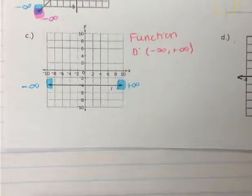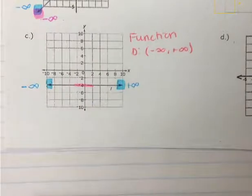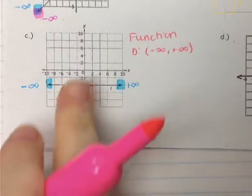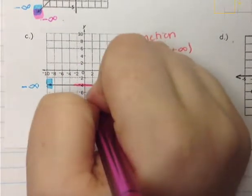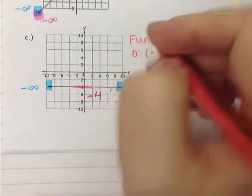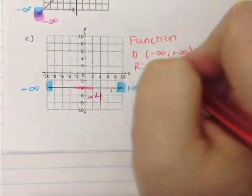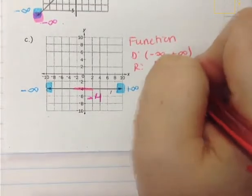For the range, the lowest y value is also the highest y value — anywhere on this horizontal line is the same y value, so I only have to highlight once. This y value is at negative 4. Since I only have one value, the range starts at negative 4 and stops at negative 4.